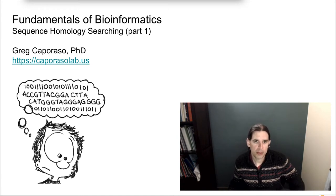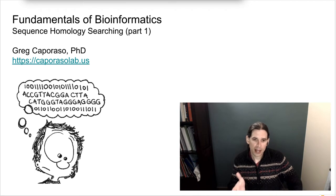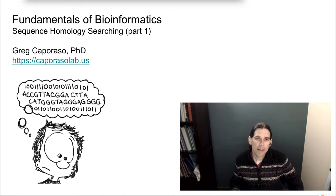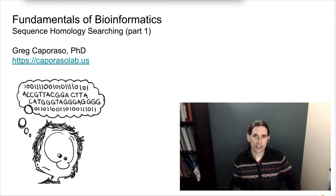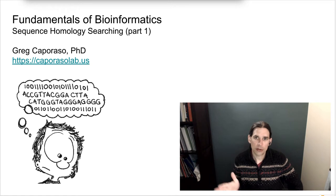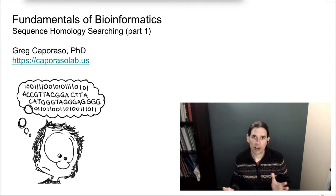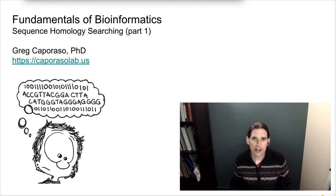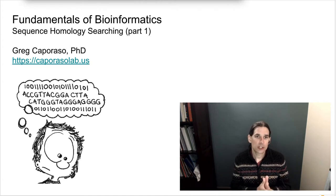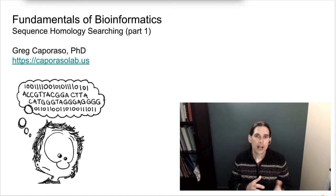A very important thing to remember is that homology and similarity are different things — one does not necessarily imply the other. Homology specifically is a discrete variable that has two states. A pair of sequences either are homologous or they're not homologous — they either do derive from an ancestral state of that sequence or they don't. Similarity, on the other hand, is a continuous variable. When we think of it as a fraction, it can be any value between 0 and 1. If we see a high similarity between a pair of sequences, we usually use that to infer that there is homology between those sequences.